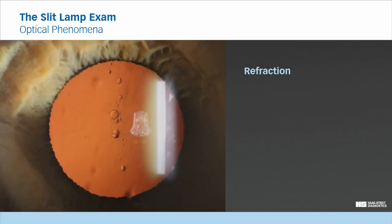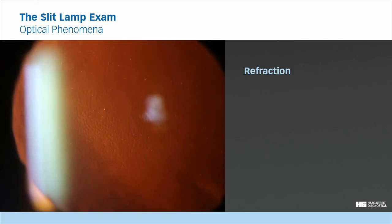During slit lamp examination, this phenomenon can be observed for example in these cysts, which are in the anterior cortex of the lens, or in this case of corneal dystrophy.